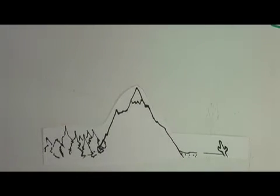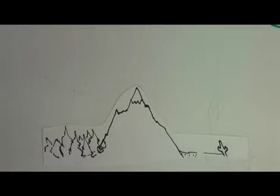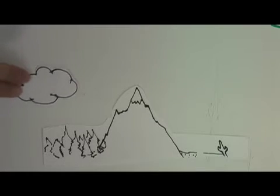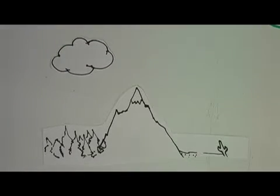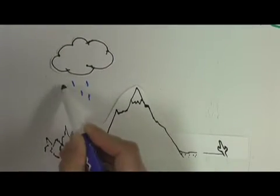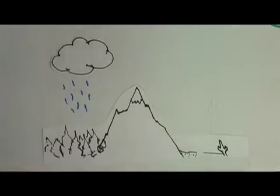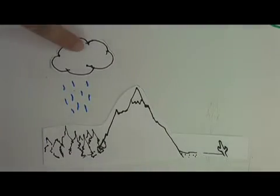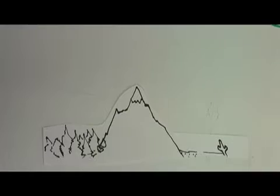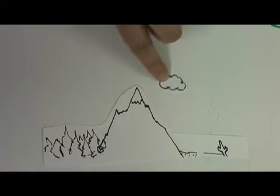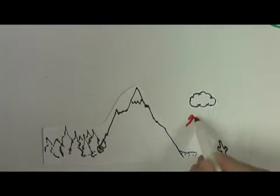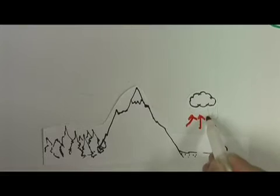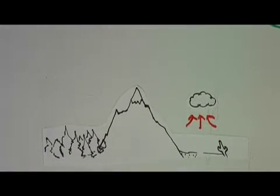Similar conditions can occur based on landscape features like mountains. Large mountain ranges can create this effect on a smaller scale. As clouds are forced to gain altitude to go over a mountain range, they cool, lowering their saturation point. The air loses its water on the side of the mountain, and as the air reaches the other side, it is dry and picks up any of the available moisture.